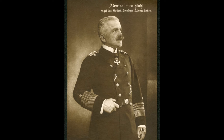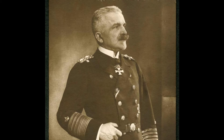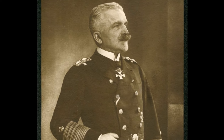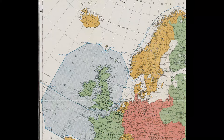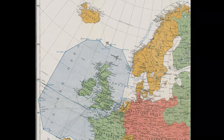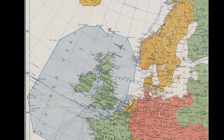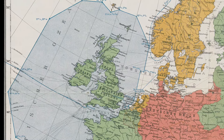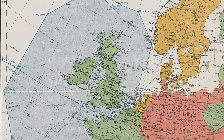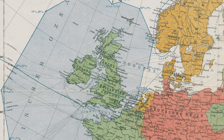On February 4th, 1915, Admiral Hugo von Pohl of the German High Seas Fleet warned that every enemy merchant vessel in British waters would be targeted, and that it may not always be possible to prevent attacks on enemy ships from harming neutral ships.